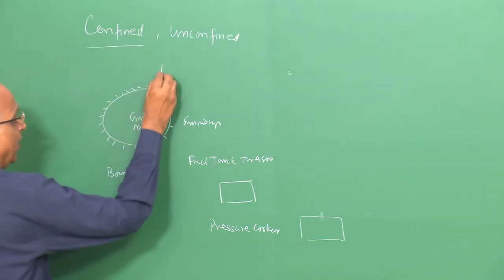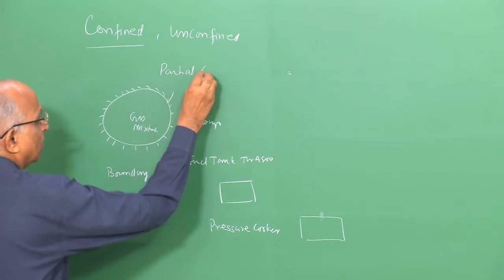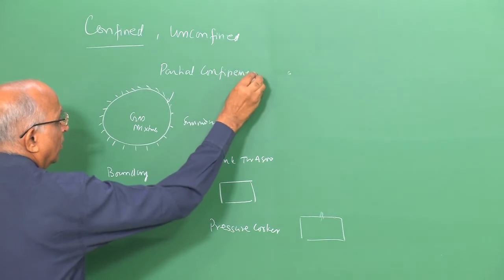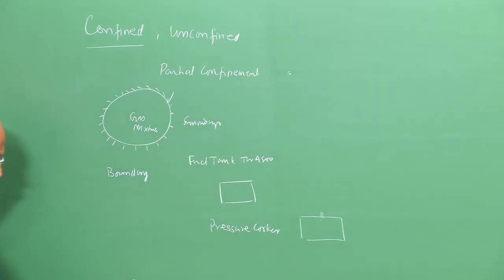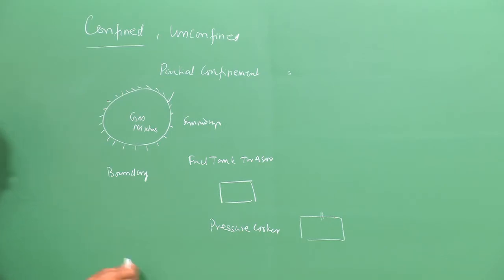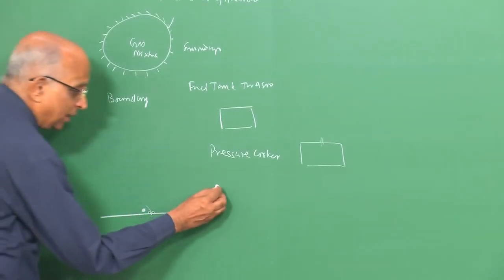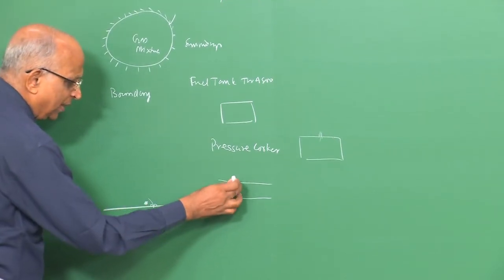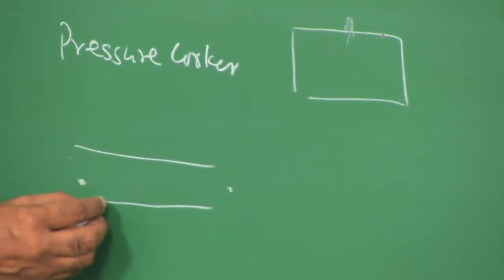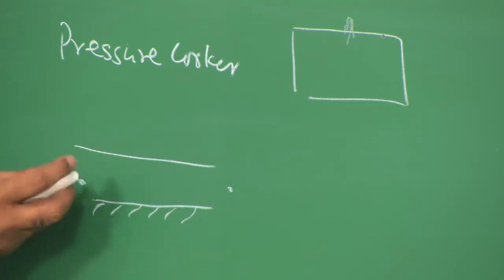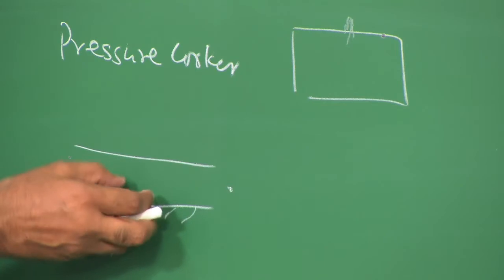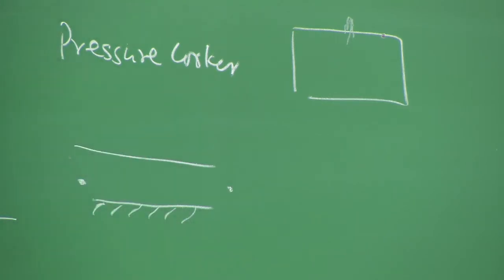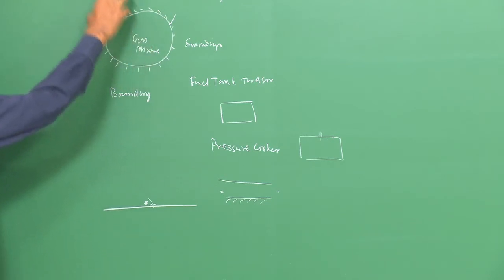In between confined and unconfined, we can have partial confinement. For instance, an explosion at or just above the ground can interact with the ground and blockages on it, creating partial confinement. Similarly, a tunnel open at both ends is partially confined — open to the atmosphere but with partial boundaries. When the boundary is fully enclosed, we say it is confined.